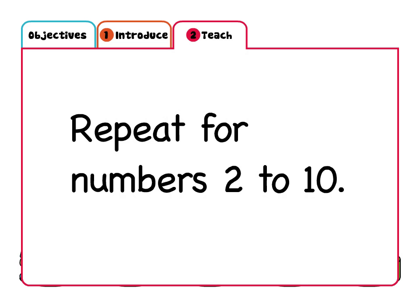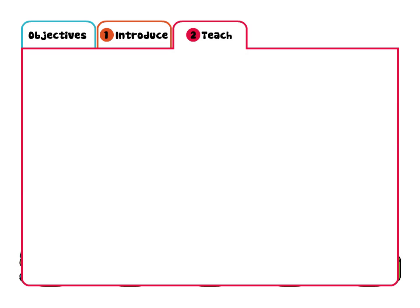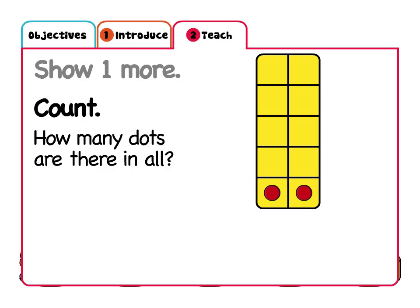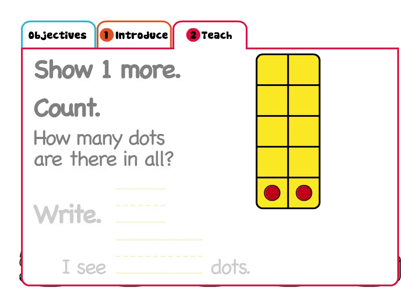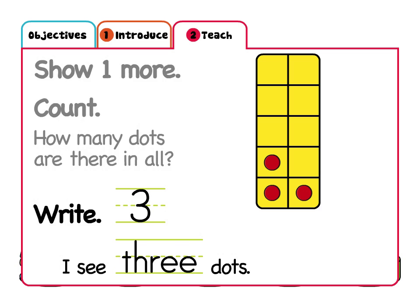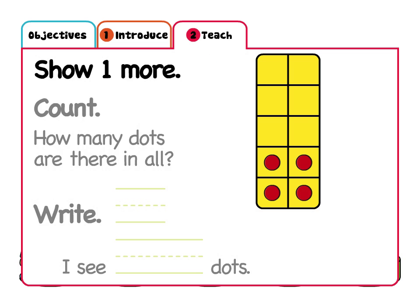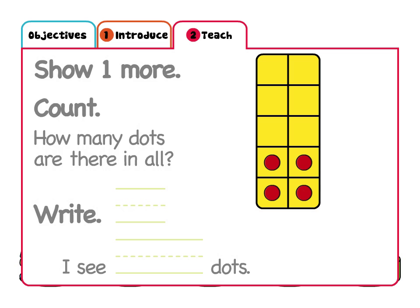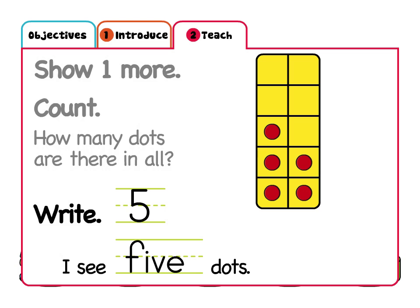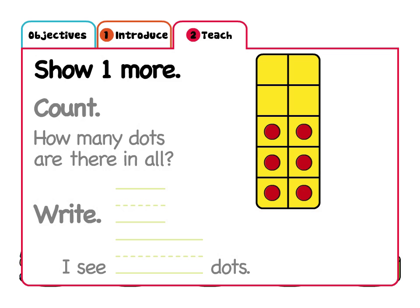Continue in the same way for each number through ten. For each number, give children time to check their model against yours. Pause from time to time and have children predict what number will come next. Filling the ten-frame in pairs of counters helps children internalize patterns of odd and even numbers, and also helps children visualize each number as one more than the preceding number.